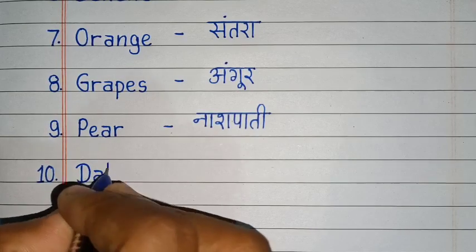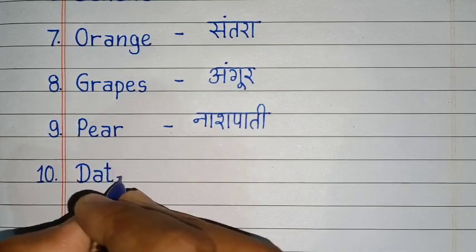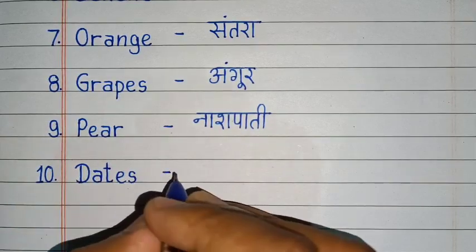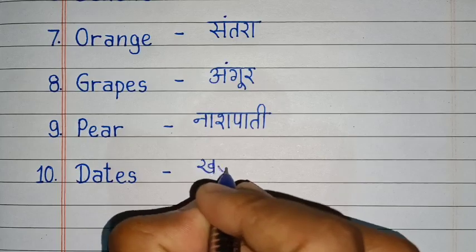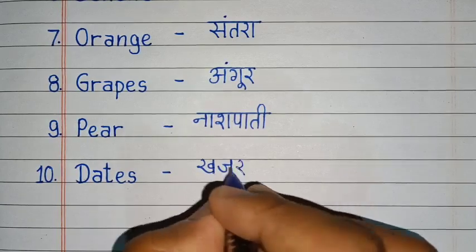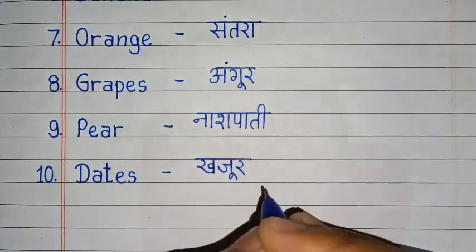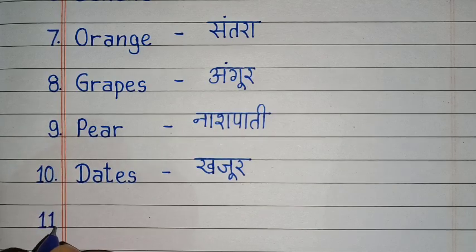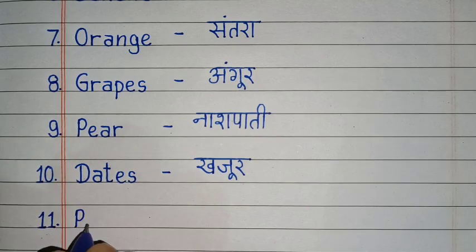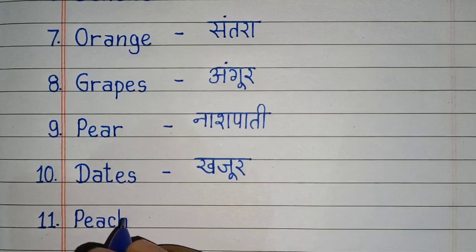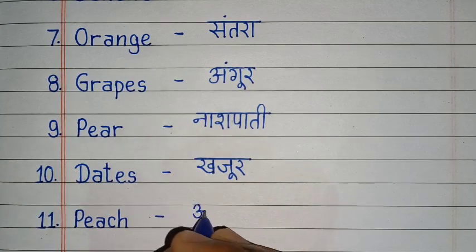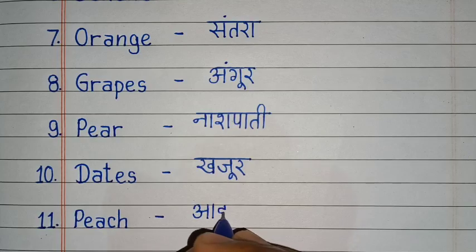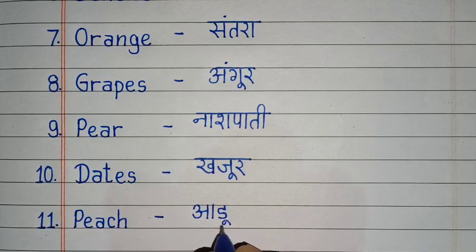D, A, T, E, S. Dates. Dates means khajur. P, E, A, C, H. Peach. Peach means aaru.